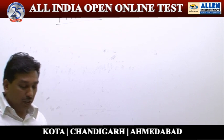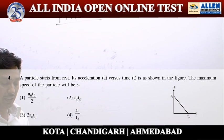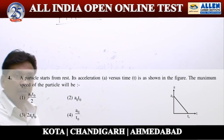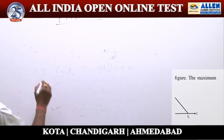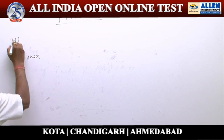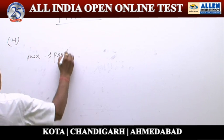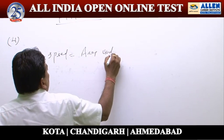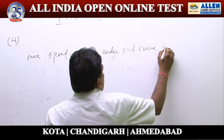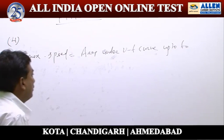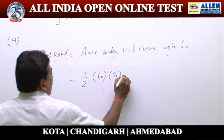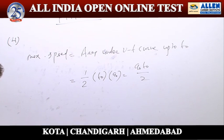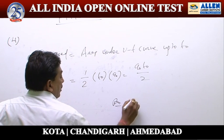Question number 4: a particle starts from rest; its acceleration a versus time t is as shown in the figure. The maximum speed of the particle — we know the area under the a-t curve represents change in velocity. Since the particle starts from rest, maximum speed equals the area under the a-t curve up to t-naught, which equals (1/2) × t-naught × a-naught, giving a-naught t-naught divided by 2. Option 1 is the correct answer.